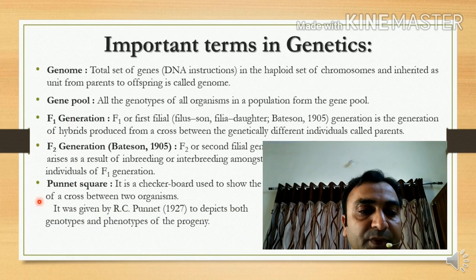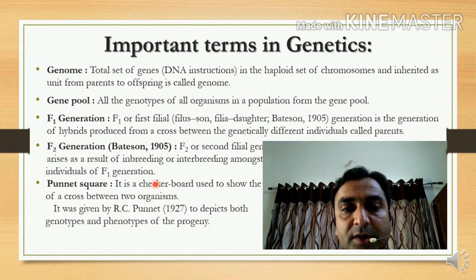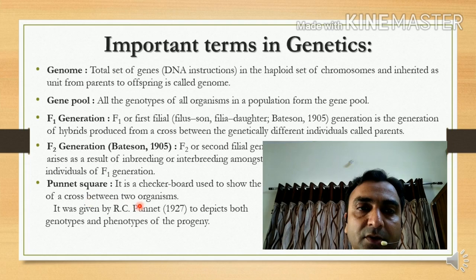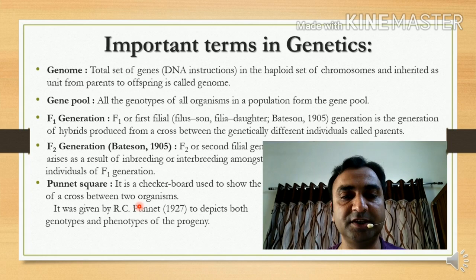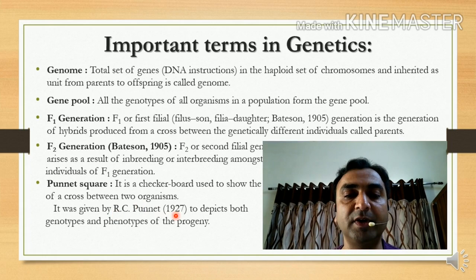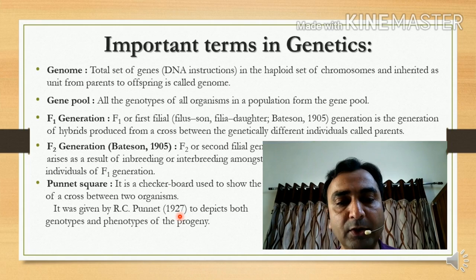Punnett Square is a methodology — a checkerboard used to show the result of a cross between two organisms. When any experiment result has to be represented, it is represented by means of the Punnett Square. It was given by R.C. Punnett in 1927 to depict both genotype and phenotype of the progeny.